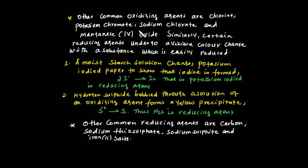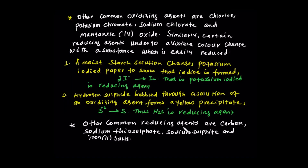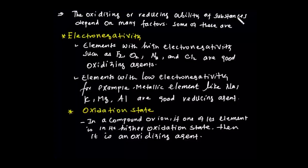The common reducing agents include carbon, sodium sulfate, and iron(II) salts. These are common reducing agents. The oxidizing or reducing stability of substances depends on many factors.